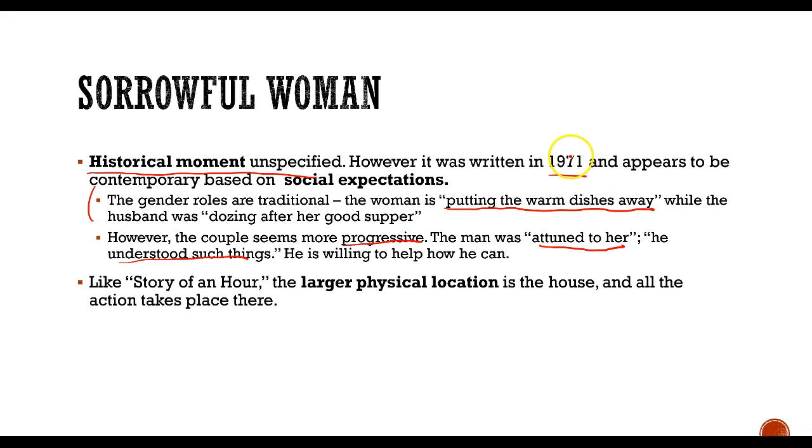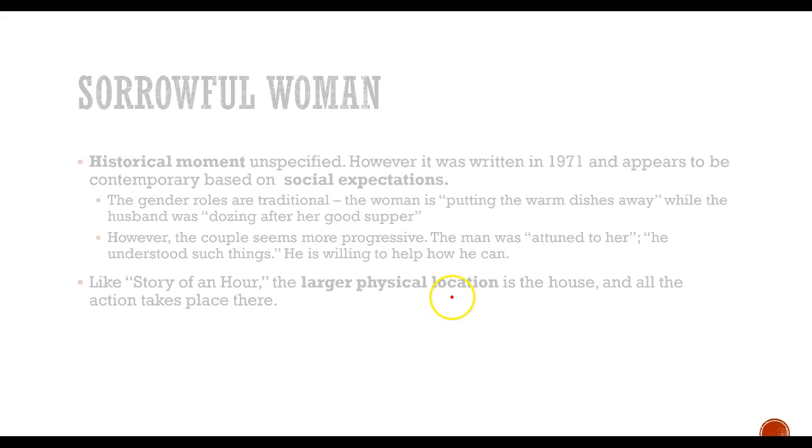So I would say probably around the 70s was when the story took place. Like story of another, the larger physical location is the house. So here again, we have a story that takes place entirely in the house. And I think that also tells us a lot about the woman's state of mind in Sorrowful Woman. She also never leaves the house, just like Mrs. Mallard, and all the action takes place there.